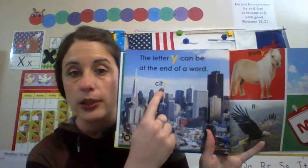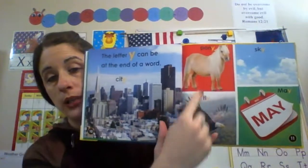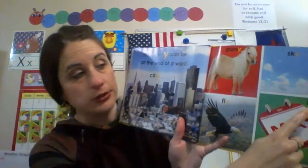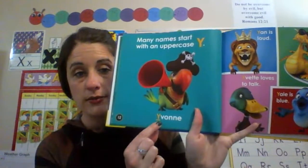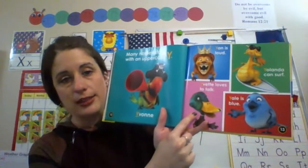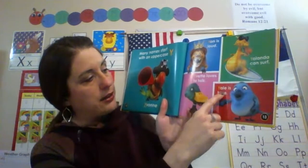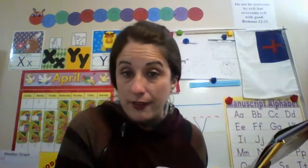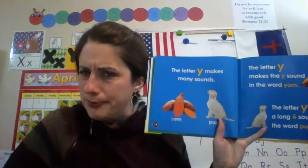The letter Y can be at the end of a word like city, pony, fly, May — which is after April — or sky. Those all have a Y at the end. Many uppercase names start with the letter Y, like Yavon, Yan, Yavette, Yale, and Yolanda. Yolanda can surf! I have never stood up on a surfboard — I've laid on my tummy in the ocean, but never standing. I think it looks like fun!